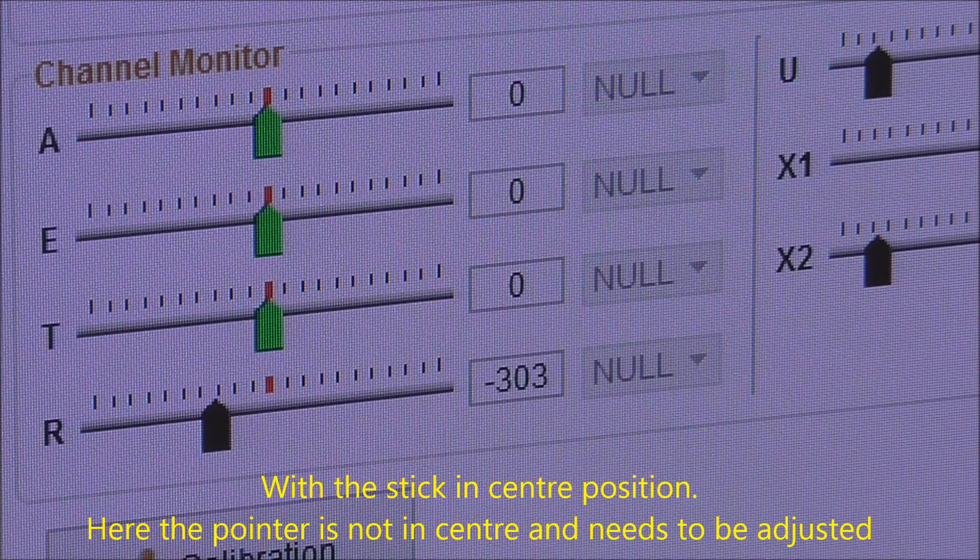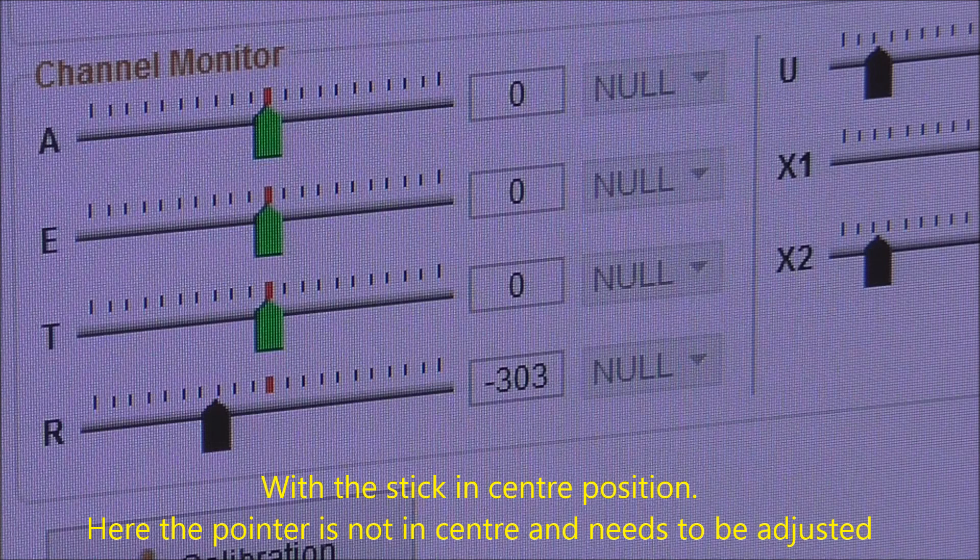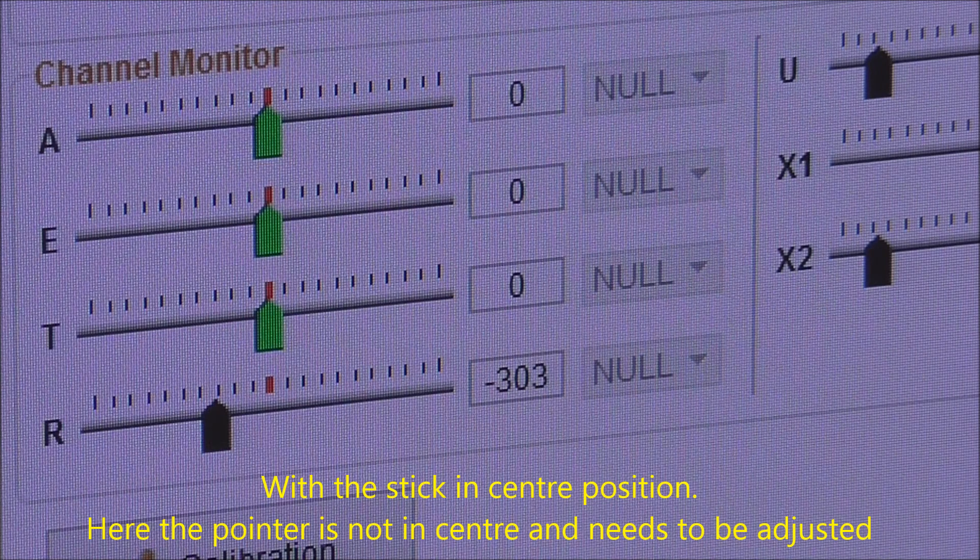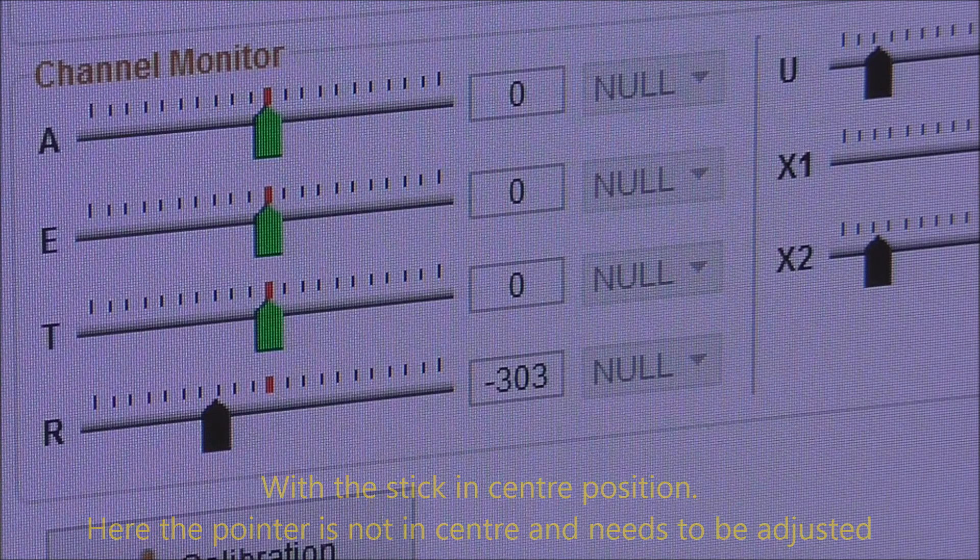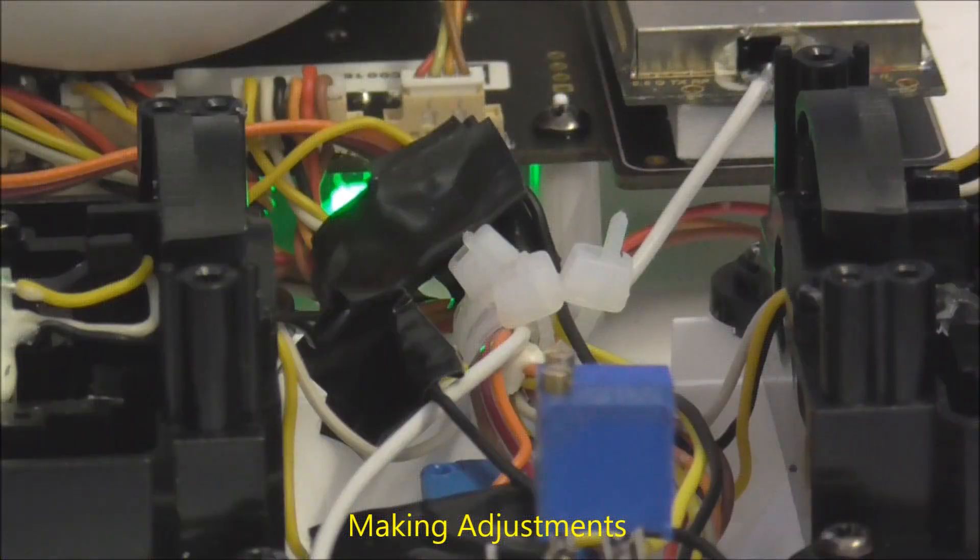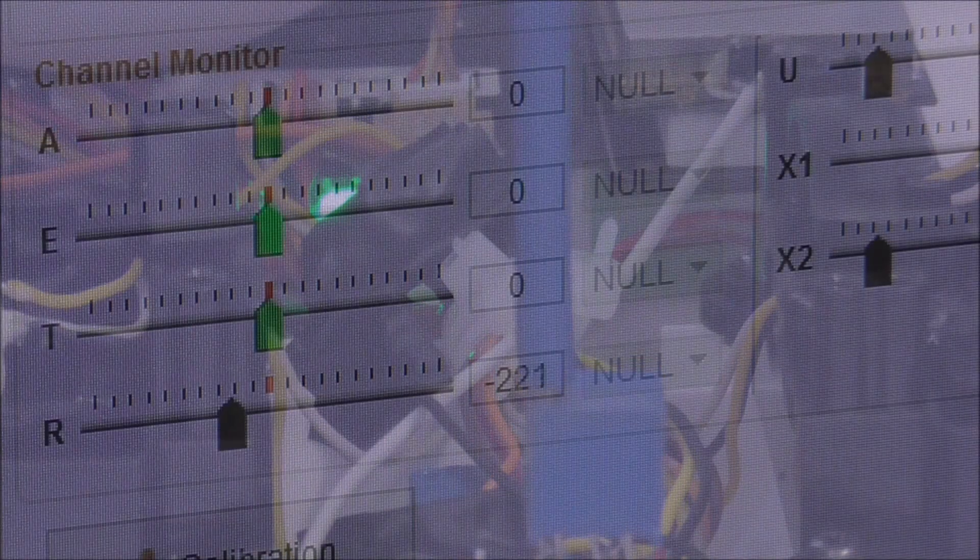With the switch in the slow yaw position and the sticks in the centre position the marker should be green and in the centre and the value should be zero. If you need to correct the values use a small screwdriver or trimming tool to make your adjustments on the presets.